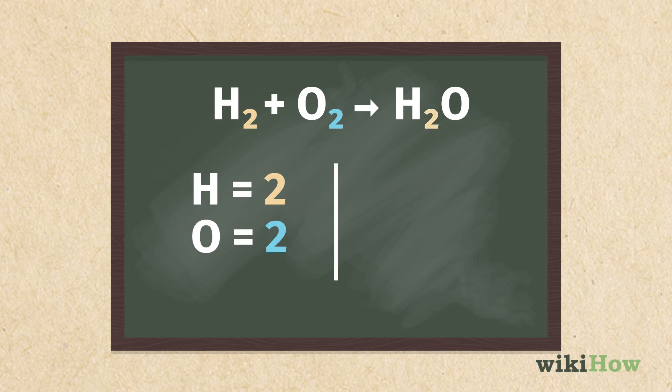There are two hydrogen atoms and one oxygen atom on the right. So you would write H equals 2 and O equals 1 under the right side. Since the number of atoms in each element isn't identical on both sides, the equation is not balanced.